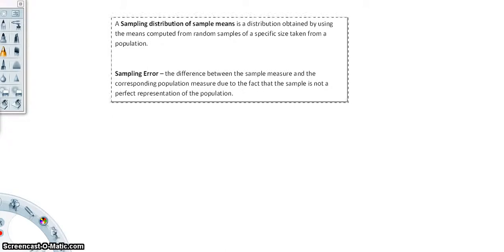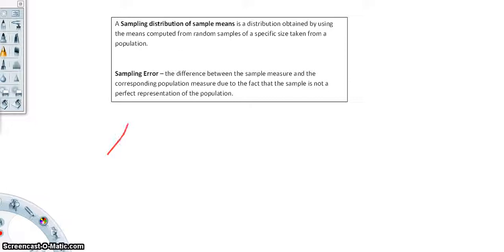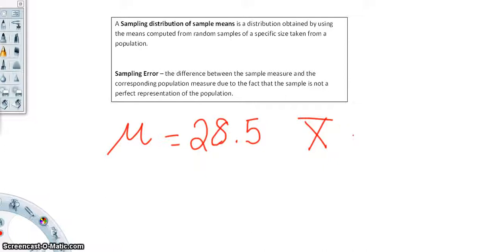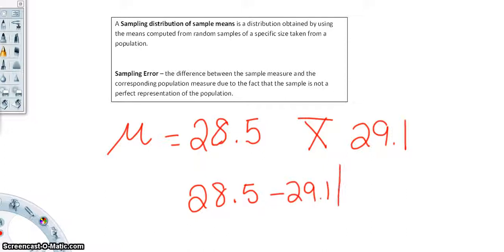The other term we have is sampling error. Sampling error is the difference between the sample measure and the corresponding population measure, due to the fact that the sample is not a perfect representation of the population. For example, if our population mean is 28.5 and our sample mean is 29.1, we calculate our sampling error as the absolute difference: 28.5 subtract 29.1, and we get an error of 0.6.